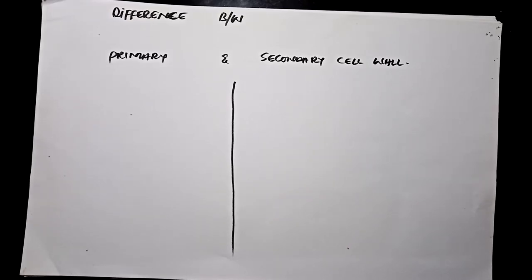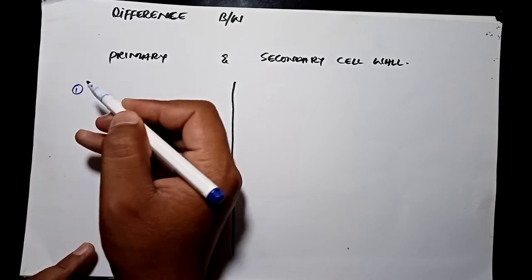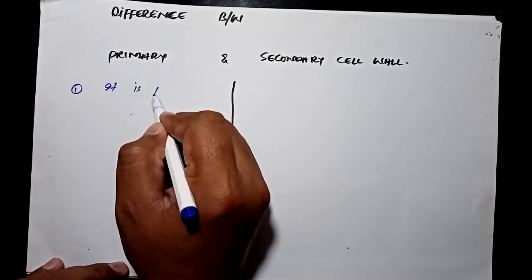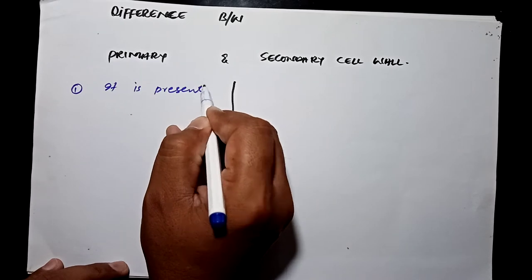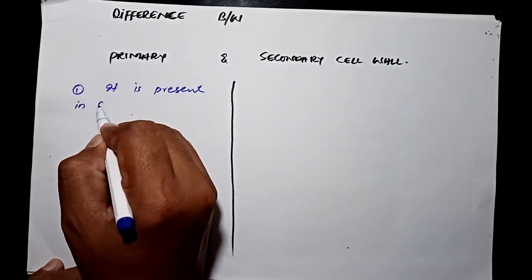Welcome again to Bio For You. In today's lecture we will create a difference between primary and secondary cell wall. Primary cell wall is present in all cells.